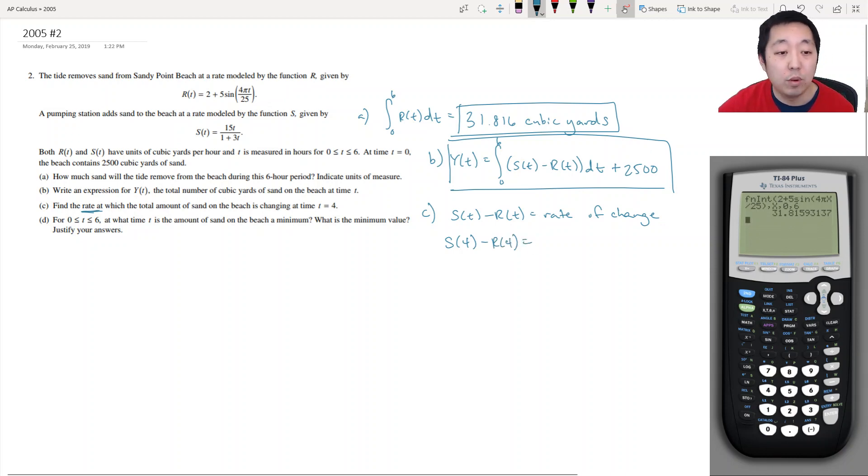So S of 4 is 15 times 4 divided by 1 plus 3 times 4, minus R of 4 which is 2 plus 5 sine of 4 pi times 4 divided by 25. And so it's changing at negative 1.909 cubic yards per hour, because those are the units of S and R.